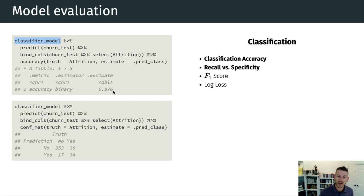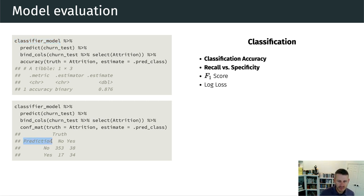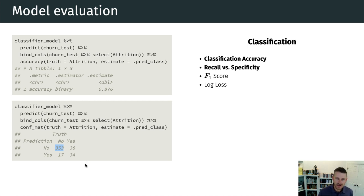Our model accurately predicts when an employee is going to leave 88% of the time. We can also create the confusion matrix for our classifier with this code. On the y-axis we have predictions made by our model — the no's and yes's — and the truth axis shows whether they actually left. Looking at the upper left corner, our model correctly predicts an employee is not going to leave 353 times. The lower right corner shows our model correctly predicts an employee will leave 34 times.